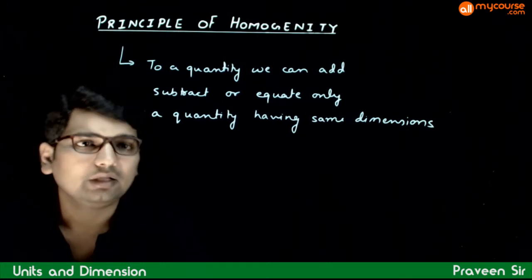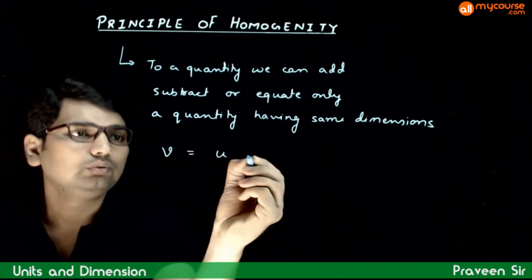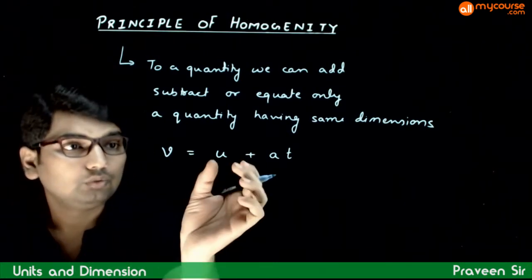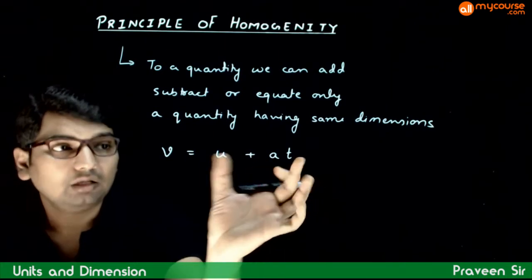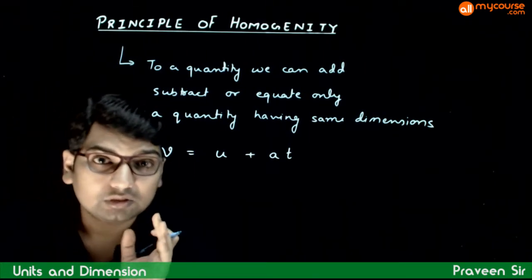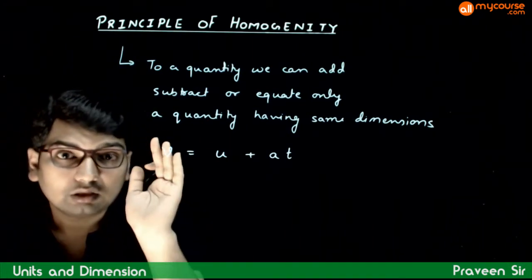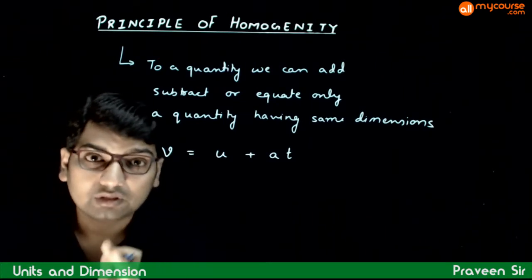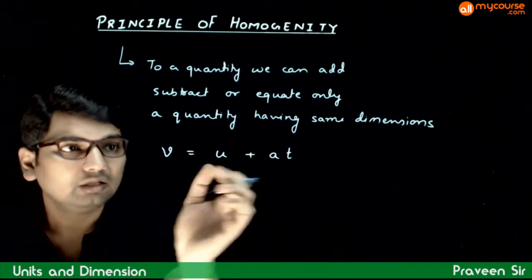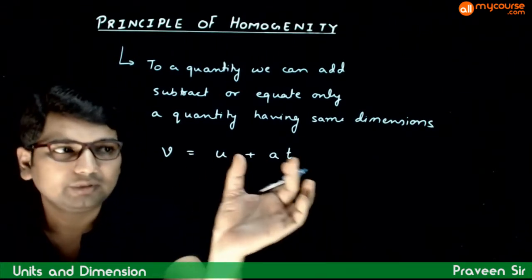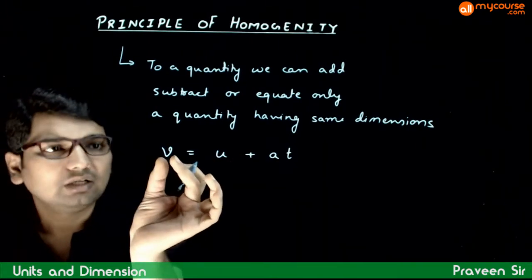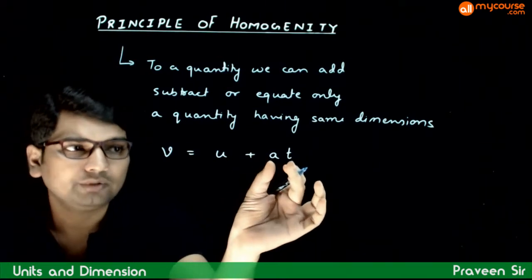For example, agar hum baat kare hai aek simple equation V equals to U plus A T. What are we doing in this equation? To U, we are adding A T, and we are equating U plus A T with V. So, principle of homogeneity says that if this equation is dimensionally correct, then U must have the dimension of A T. And, U plus A T — agar same dimensions ki dho quantities add karte ho, to dimension mein koi fark nahi parta. U plus A T ka jo dimension hai, woh V ke bhi equal hona chahiye. That means, dimension of V has to be equal to dimension of U, has to be equal to dimension of A into T.